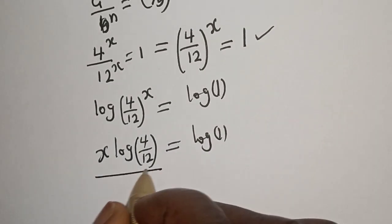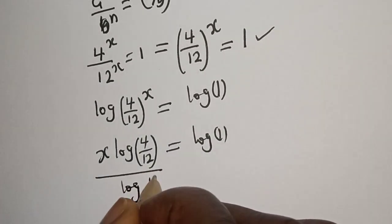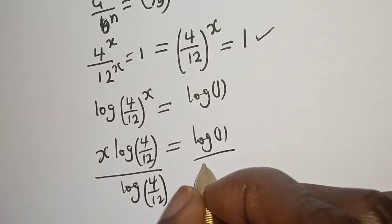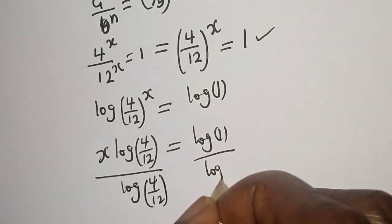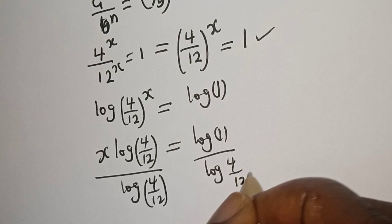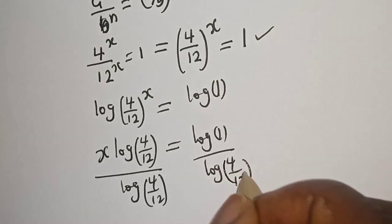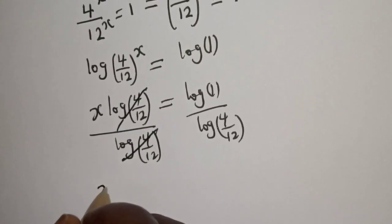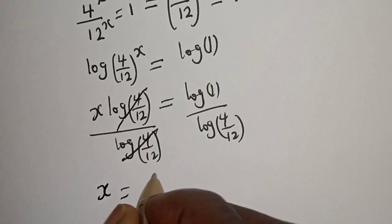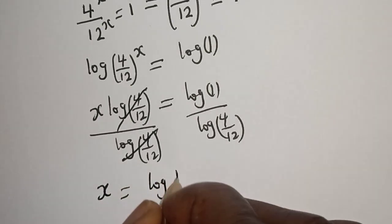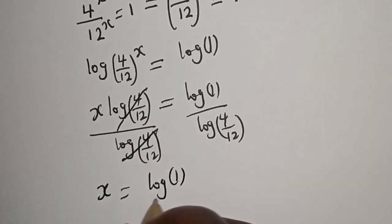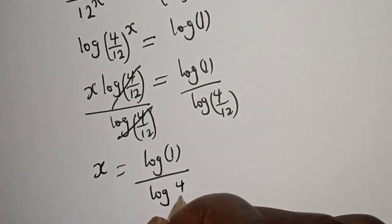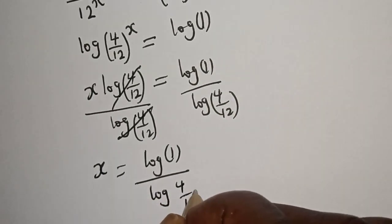Let's divide both sides by log of 4 over 12. 1 divided by log 4 over 12 — this will cancel this. So, s is equal to log 1 divided by log of 4 over 12.